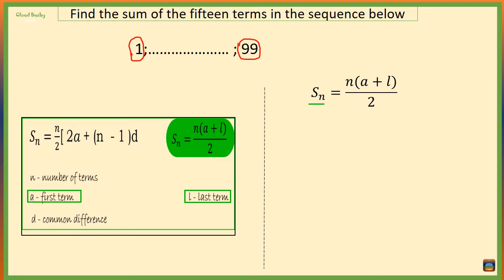The sum of the first n terms is equal to half the number of terms times first term plus last term. So we want to substitute into this formula a, n, and l. a is the first term 1, l is given as 99 the last term.